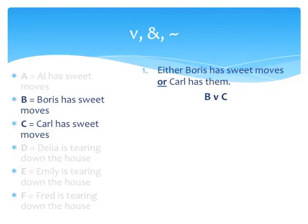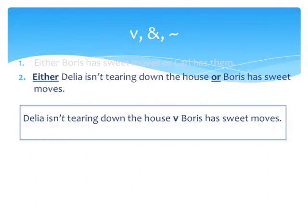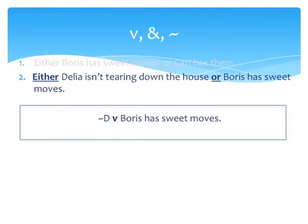Sentence 1 is simply the disjunction of B and C, so it is equivalent to B and C joined by the V. In sentence 2, we find both negation and disjunction. The main connective — what defines the whole sentence — is EITHER...OR, which is the V. So our first step is to add the V. The left disjunct is 'Delia isn't tearing down the house,' which is simply the negation of D. So by replacement, we get tilde-D, V, Boris has sweet moves. The right disjunct is just B, so the result is tilde-D or B. And this is the translation of sentence number 2.